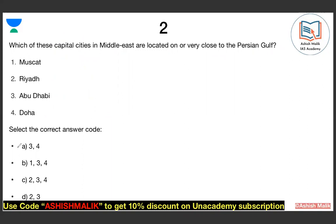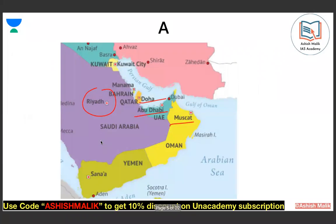The answer here is option A — Doha and Abu Dhabi. Riyadh is not on any coast; it is in the interior, landlocked. Muscat is not on the Persian Gulf — it is on the Gulf of Oman. The Persian Gulf is the inner region. Doha, the capital of Qatar, is very close to the Persian Gulf coast. Abu Dhabi, the capital of UAE, is exactly on the Persian Gulf coast. So Doha and Abu Dhabi are the right answers — option 3 and 4.